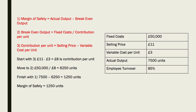Now you can take that £8 and put it into formula two, because now you know your contribution per unit — you know what to divide the fixed costs by. Divide £50,000 by £8, and that comes to 6,250 units. Never forget units, because it's output.